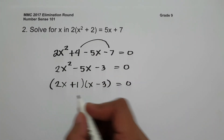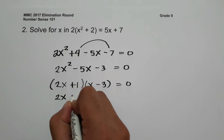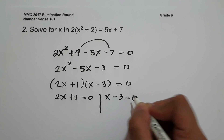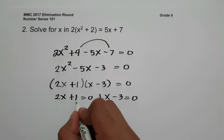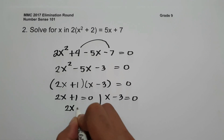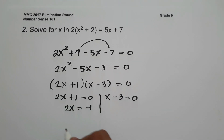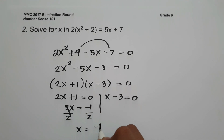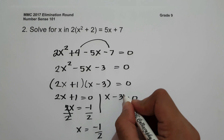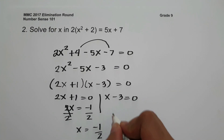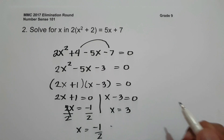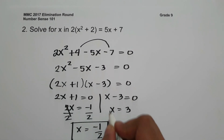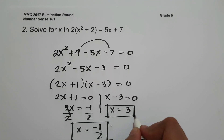Setting each factor equal to 0: 2x plus 1 equals 0, and x minus 3 equals 0. For the first, moving 1 gives 2x equals negative 1, and dividing both sides by 2 gives x equals negative one-half. For the second, moving negative 3 gives x equals 3. Therefore, the values of x are negative one-half and 3.